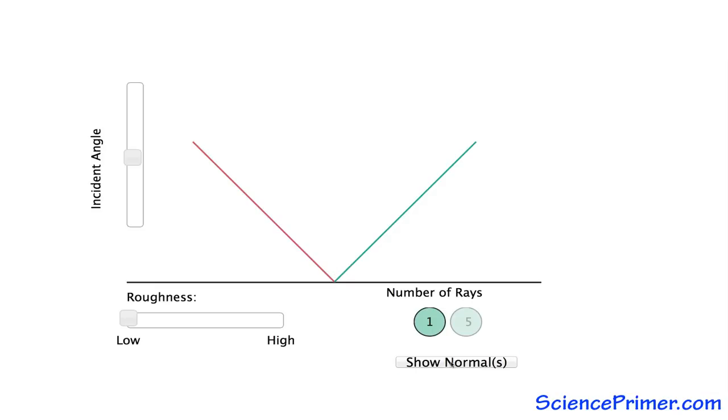In contrast to specular reflection, diffuse reflection occurs on rough surfaces. In diffuse reflection, all the reflected rays still behave in accordance with the law of reflection, but the roughness of the surface results in variation in the normals along the surface.